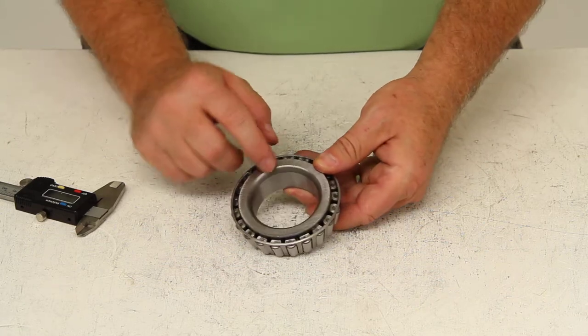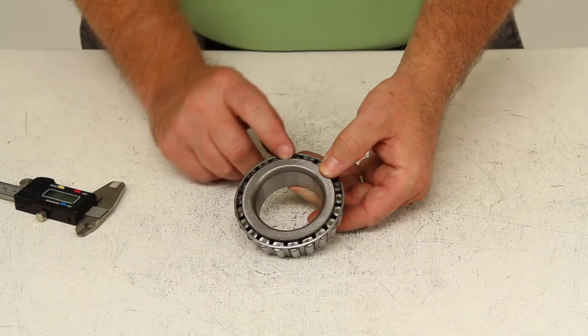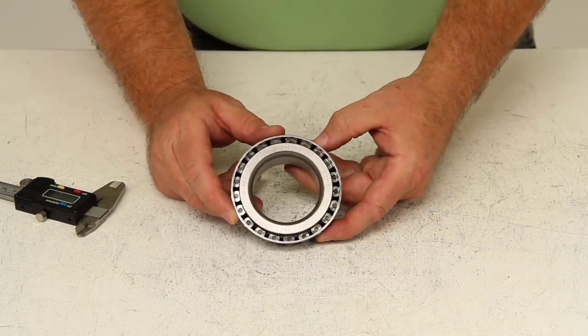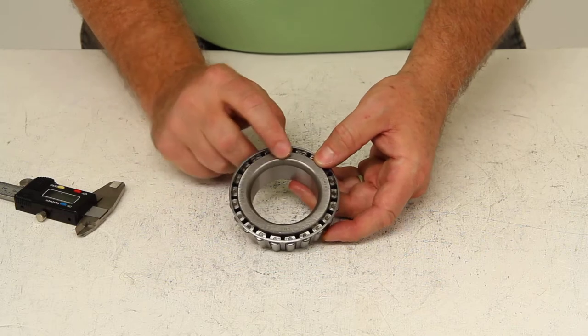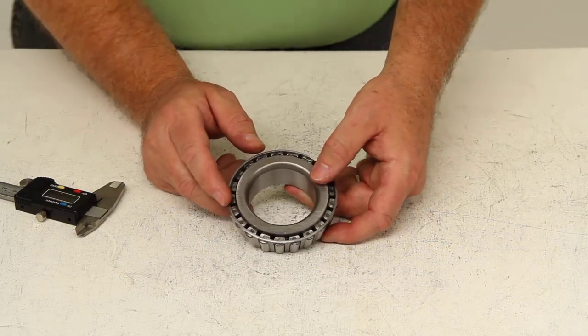On this one, if you look on the inner ring it would be stamped 28580, and the easiest way to get a replacement for your trailer would be to just look on the wheel bearing and get that number. Then we can cross-reference and get you the correct size.